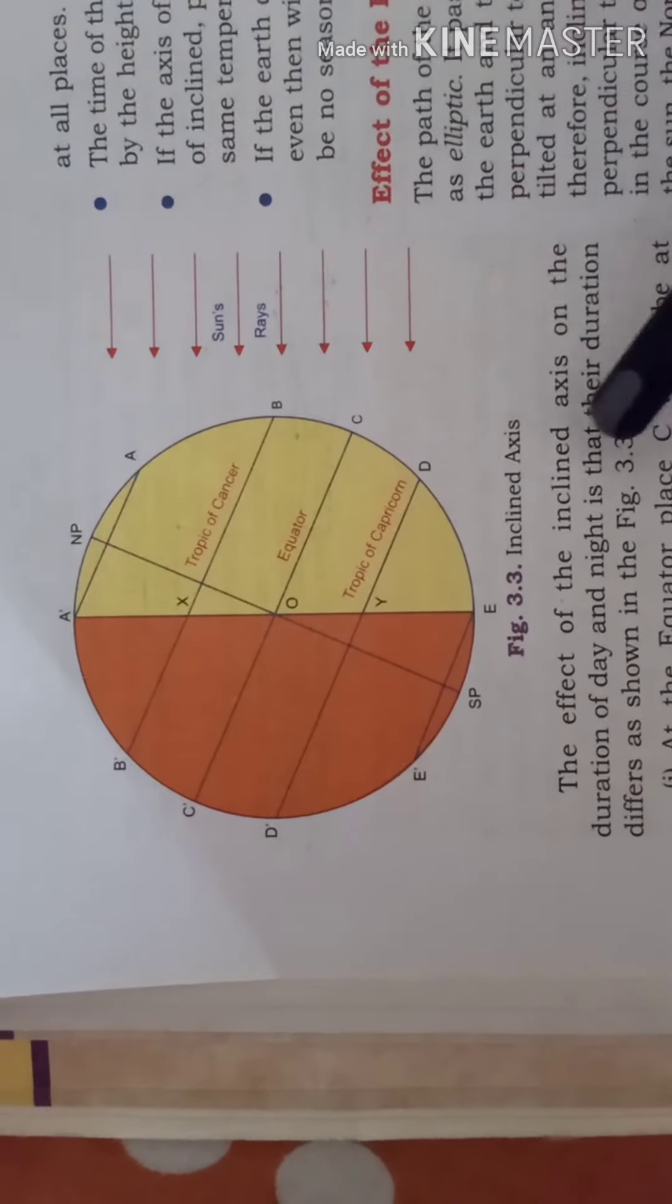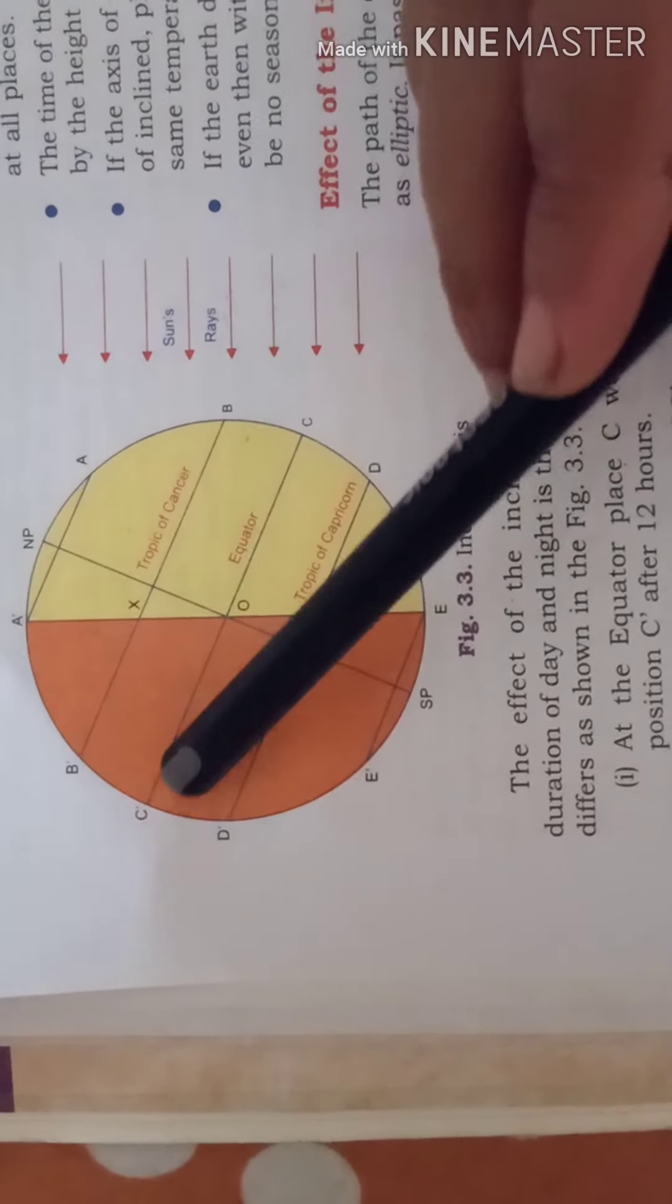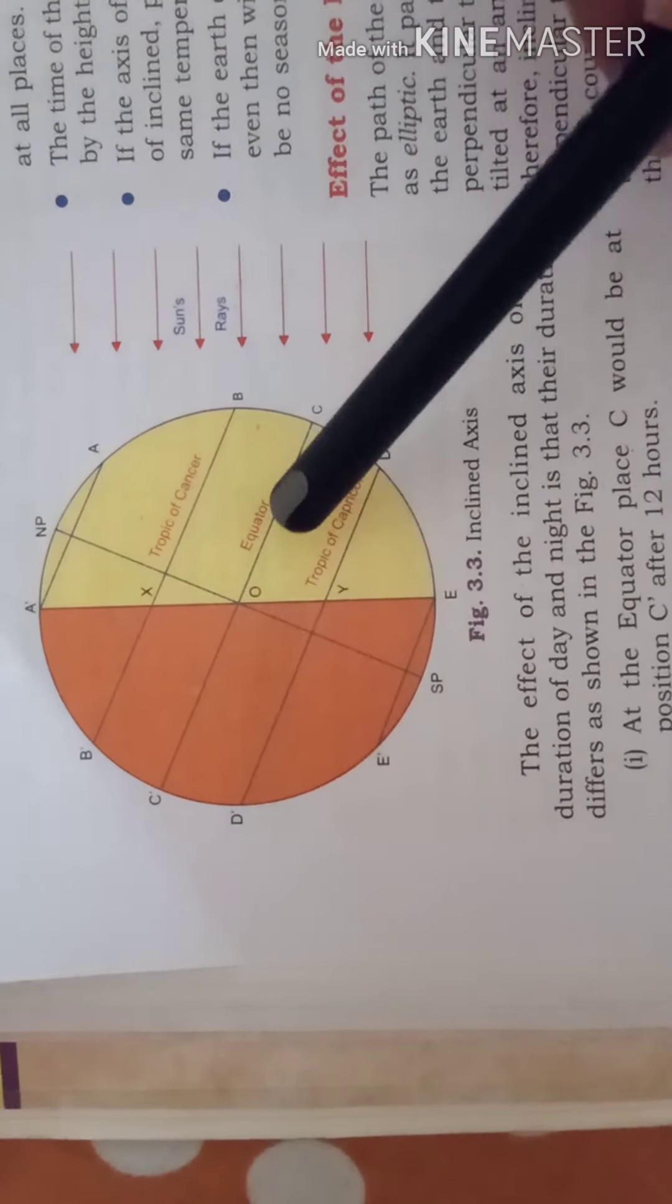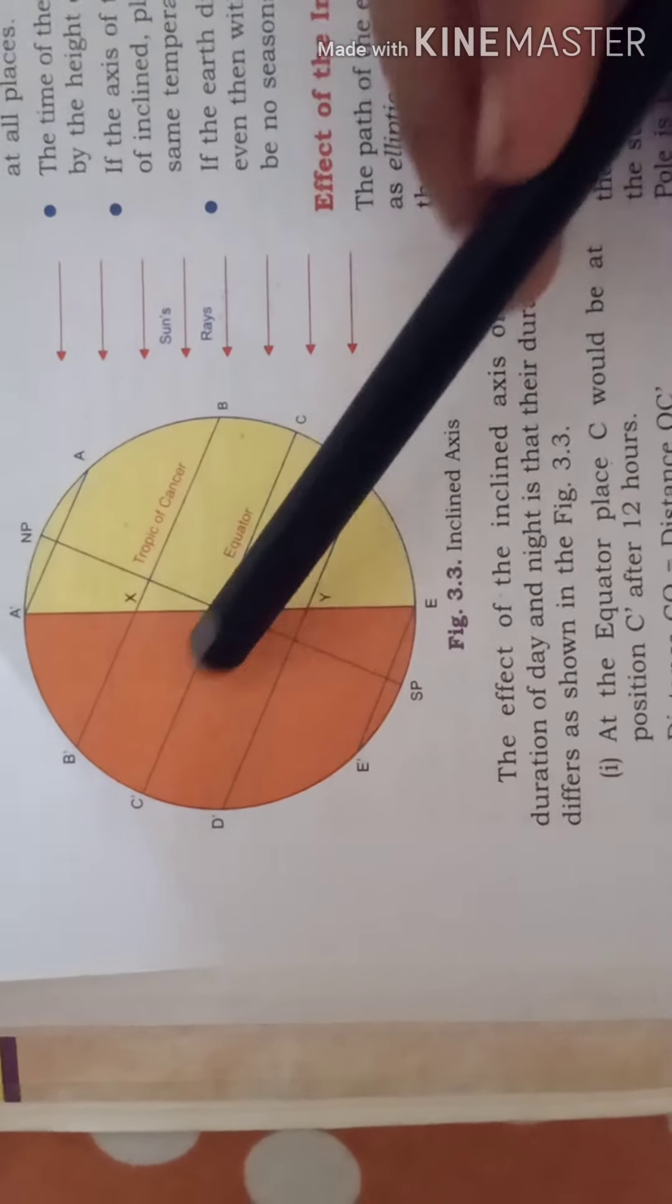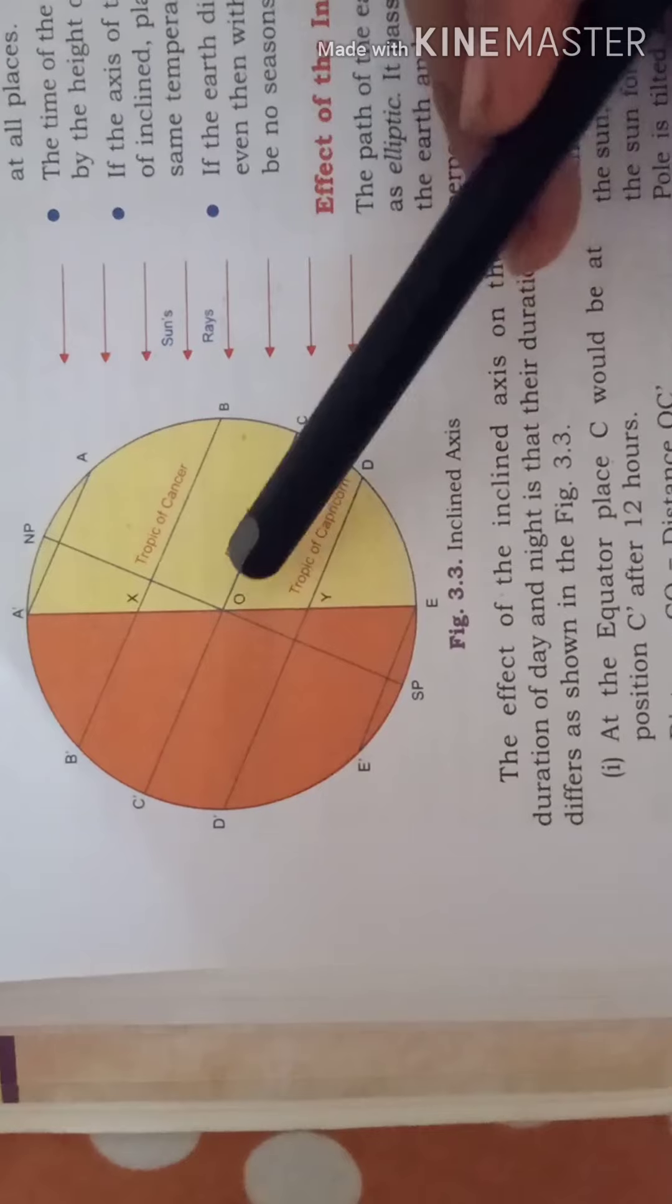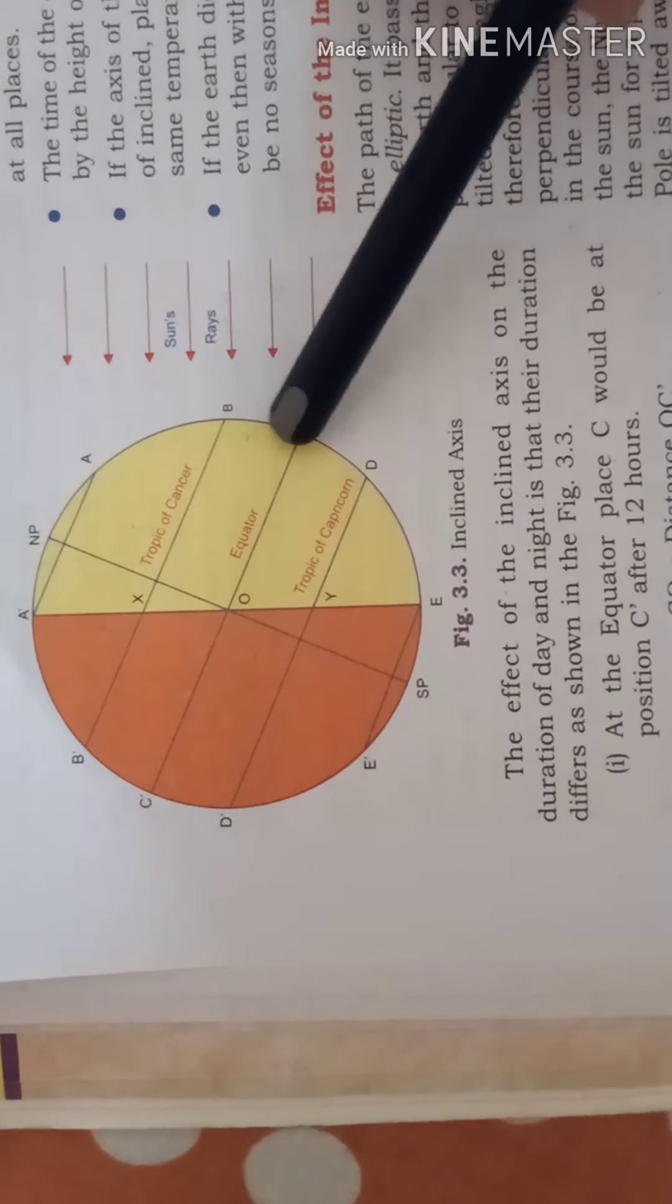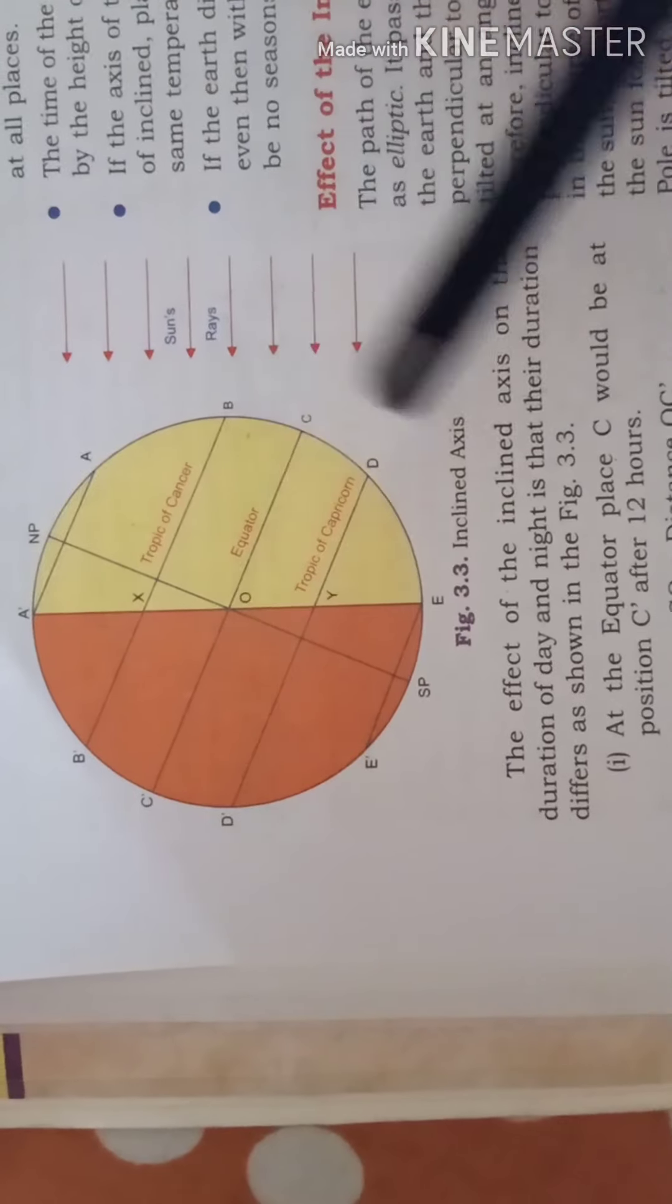At the equator the place C would be at C1 after 12 hours because distance of CO is equal to CO1. The length of the day and night is equal and you all know that at the equator there are 12 hours of day and 12 hours of night throughout the year.